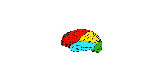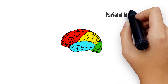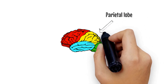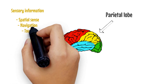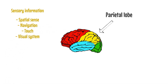The parietal lobe is one of the four major lobes of the cerebral cortex in the brain of mammals. The parietal lobe integrates sensory information among various modalities, including spatial sense and navigation, the main sensory receptive area for the sense of touch, and the dorsal stream of the visual system.